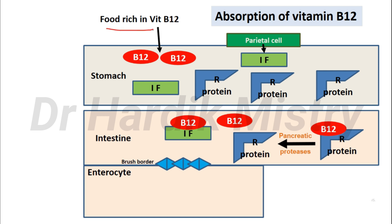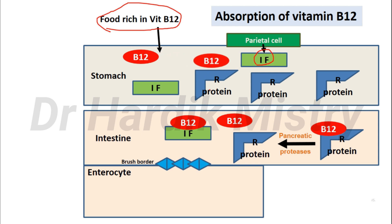First, we must consume food rich in vitamin B12. Once we eat food with a high level of vitamin B12, it enters the stomach. Inside the stomach, parietal cells secrete intrinsic factor, which is necessary for the absorption of vitamin B12. There is also an R protein present in the stomach, and vitamin B12 has a high affinity for the R protein.